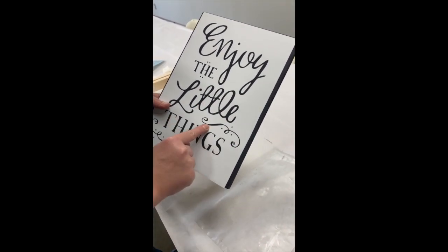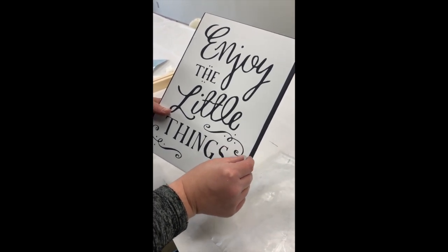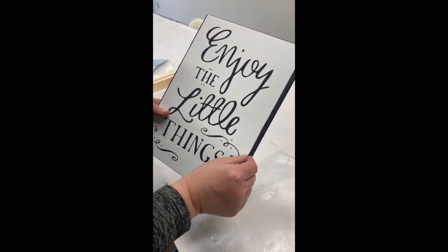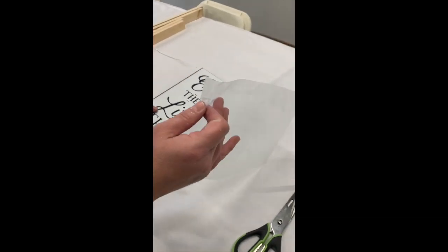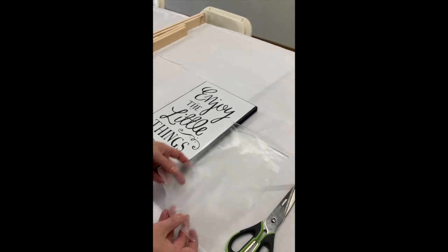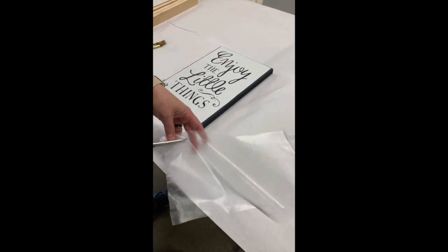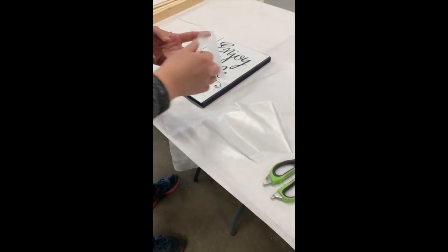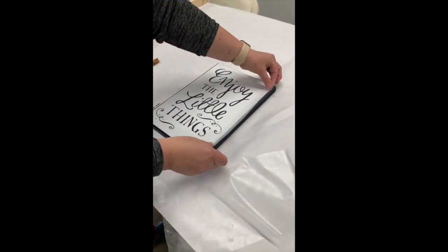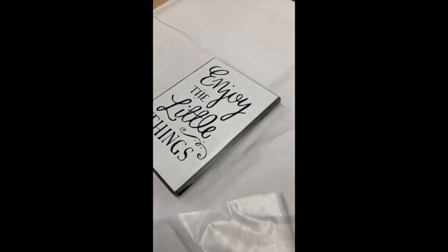So what I do is I take some of this plastic and I just cut it into strips and I lay it along the edge wherever I need it to protect the background so that I don't get paint where I don't want.